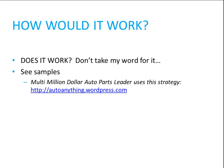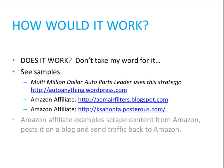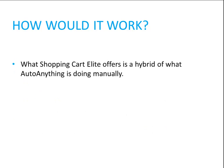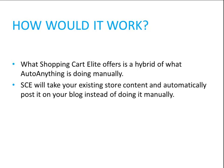There is a multi-million dollar auto parts leader that uses this strategy. You can visit autoanything.wordpress.com and see exactly how their blog is structured. If this company does it for themselves, you don't have to take my word for it — they would not be doing it on an active basis if it wasn't working. You can also see two Amazon affiliate sites using the same technique. The Amazon affiliate example scrapes content from Amazon, posts it on the blog, and sends traffic back to Amazon. The AutoAnything example is content manually copied by their staff to send traffic back to AutoAnything. What Shopping Cart Elite offers is a hybrid of what AutoAnything is doing manually, except it will take your existing store content and automatically post it on your blog.